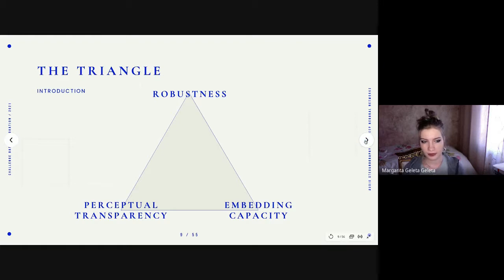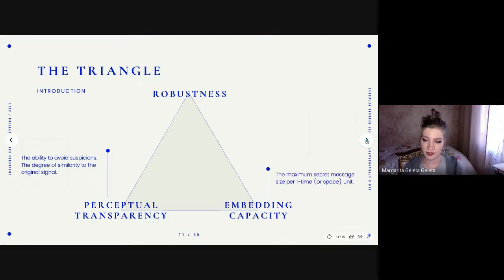The complexity of steganographic methods relies on the difficulty of attaining three objectives at once, which are namely perceptual transparency, which is the ability to avoid suspicions; the embedding capacity, which is the maximum secret message size per one time or space unit; and robustness, which is the ability to withstand intentional or accidental signal attacks. For example, if you take an image and compress it, will you be able to extract again the secret image within it? Not so many algorithms attain two of those objectives, let alone three objectives at once.